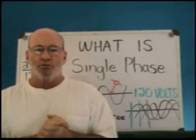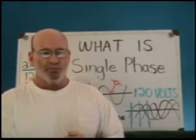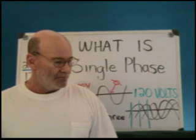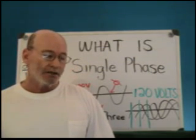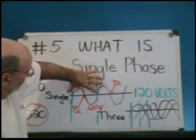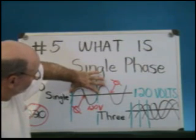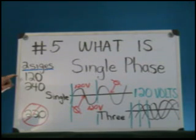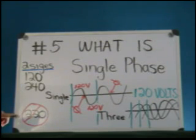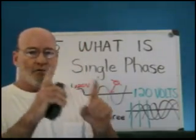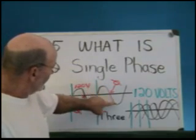Welcome to lesson number five of Soft Cell Electrical School. What is single phase electricity? Single phase electricity is a cycle of voltage that operates in the same time phase — a single time phase which in the United States is 1/60th of a second. It comes in two sizes: 120 volts and 240 volts. There is no such thing as 220 volts, so we're just going to get rid of that. If you recall, alternating current goes back and forth, as represented on this sine wave here.